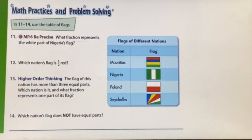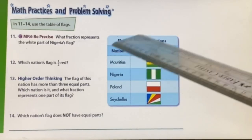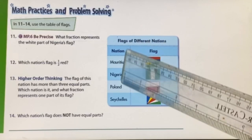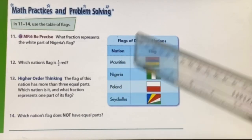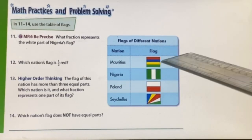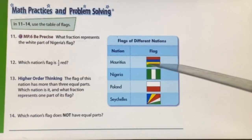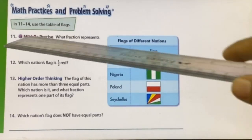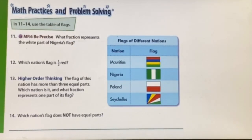First, read the information given in the table. These are flags of different nations: Mauritius, Nigeria, Poland, and Seychelles. These flags are divided into equal and unequal parts. Question eleven: what fraction represents the white part of Nigeria's flag? Look at Nigeria's flag — how many parts are white will be your numerator, and how many total parts the flag has will be your denominator.